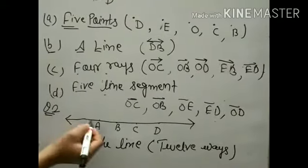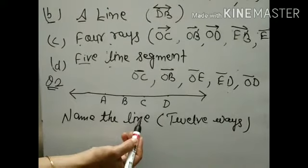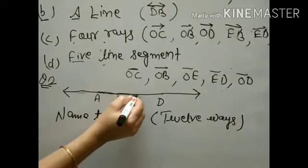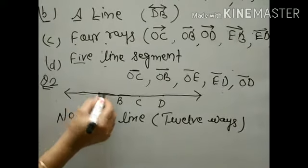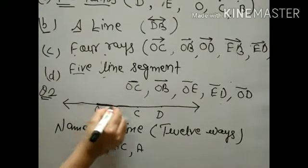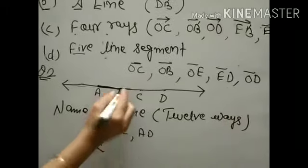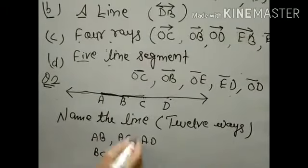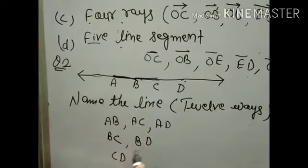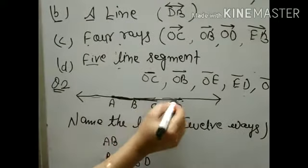Come to question number 2. A line is given — name the line in 12 ways. You have to write the name of the line in 12 ways. Look at your line — you can name it as AB, BC, etc. Starting from A: write AB, then AC, then AD — so from A: AB, AC, AD — that is 3. Then start from B: BC and BD. Then start from C: CD. That finishes — how many ways? 1, 2, 3, 4, 5, 6 — these 6 ways directly done: AB, AC, AD, BC, BD, CD. Mention the line notation.